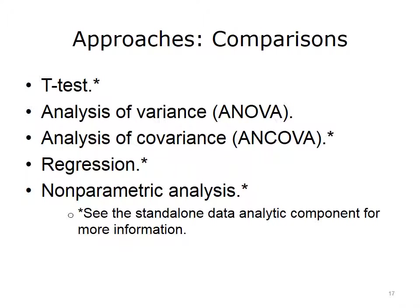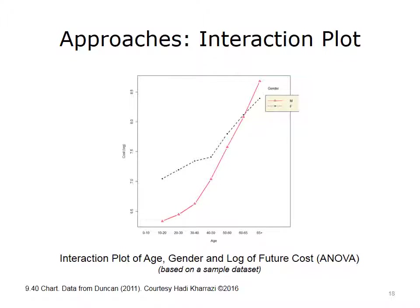Comparison methods can be used to find significant difference of means or variances in two given populations. The comparative techniques are often used to guide the development of predictive models in population health analytics. This figure shows the interaction plot of age, gender, and log-transformed cost. The solid line shows the increase of cost in males as age increases, while the dotted line shows the increase of cost in females as age increases. Note that there is a deflection point at the far right side of the diagram where the two lines cross each other.